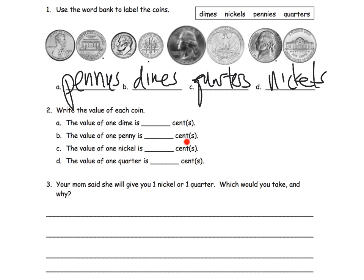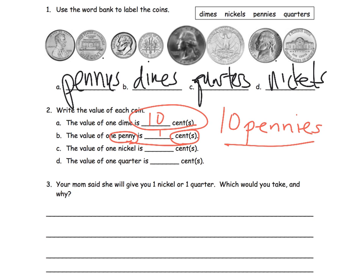Now the next step is: do we know the value of each of these coins? The value of a dime is 10 cents or 10 pennies. And the value of one penny is one cent or one penny. See how we're connecting the word pennies with cents? That's kind of important. So instead of saying 10 cents, we could also say 10 pennies, and it's supposed to mean the same thing — 10 cents, 10 pennies. I'll let you finish the rest of these.